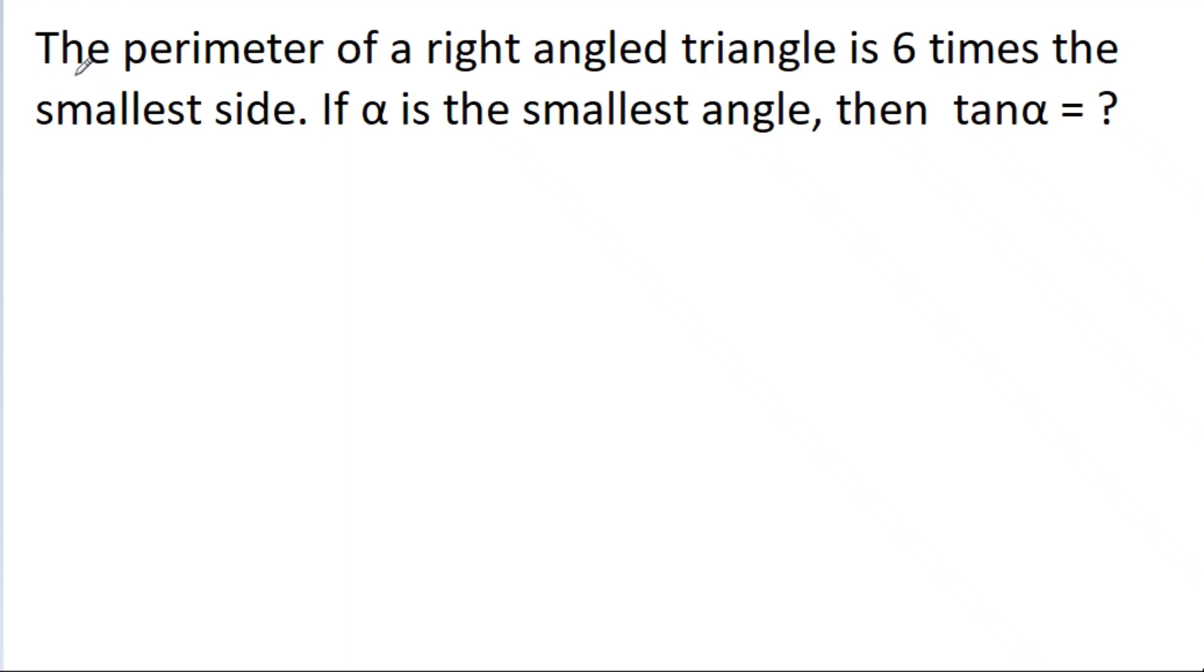In this video, the perimeter of a right-angled triangle is 6 times the smallest side. If α is the smallest angle, then we have to find the value of tan α.